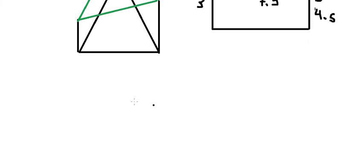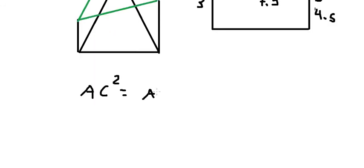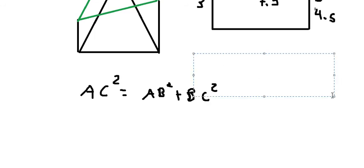We want to find AC. That should be found using AC squared equals AB squared plus BC squared — this is the Pythagorean theorem.